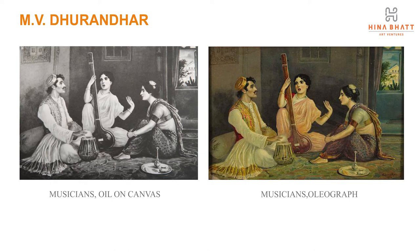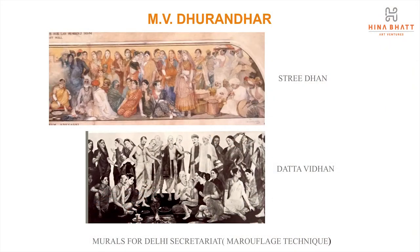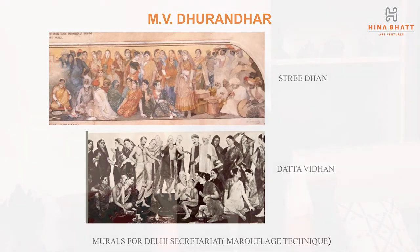Dhurandar was part of the team of staff and students of J.J. School of Art who, under Principal Gladstone Solomon, executed the murals at the Imperial Secretariat in New Delhi. These murals are done in the Marouflaj technique, wherein the canvas is pasted on the wall surface. Here are two examples which show the Hindu civil code — the Stridhan and Datta Vidhan sequences.